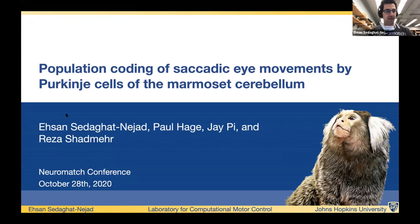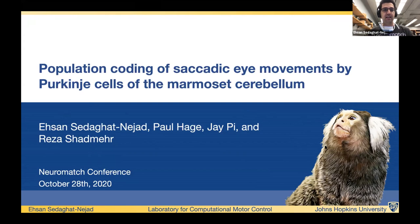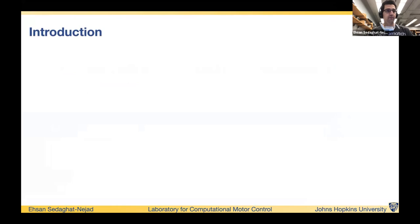My talk today is about population coding of saccadic eye movements by Purkinje cells of the marmoset cerebellum. I'm going to talk about this amazing and relatively new non-human animal model — marmoset monkeys — and present data recorded from the cerebellum. The other two talks were about the cortex; this talk is about the cerebellum, and specifically about the Purkinje cells of the cerebellum.